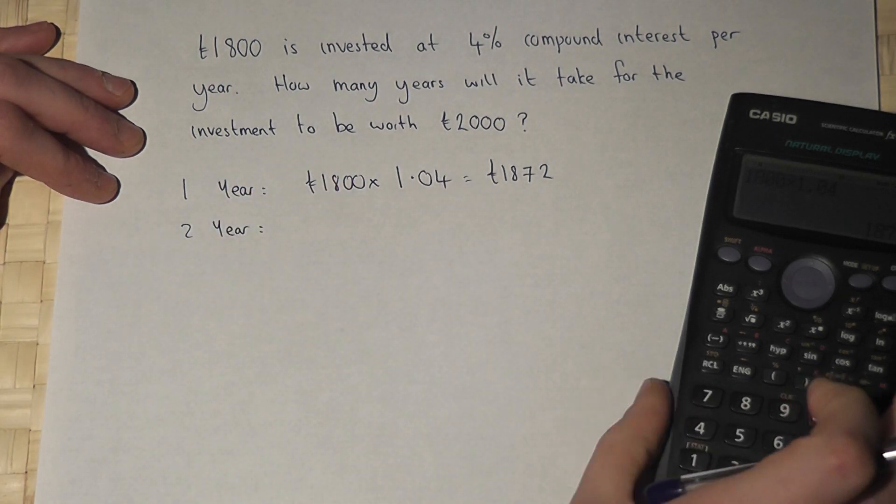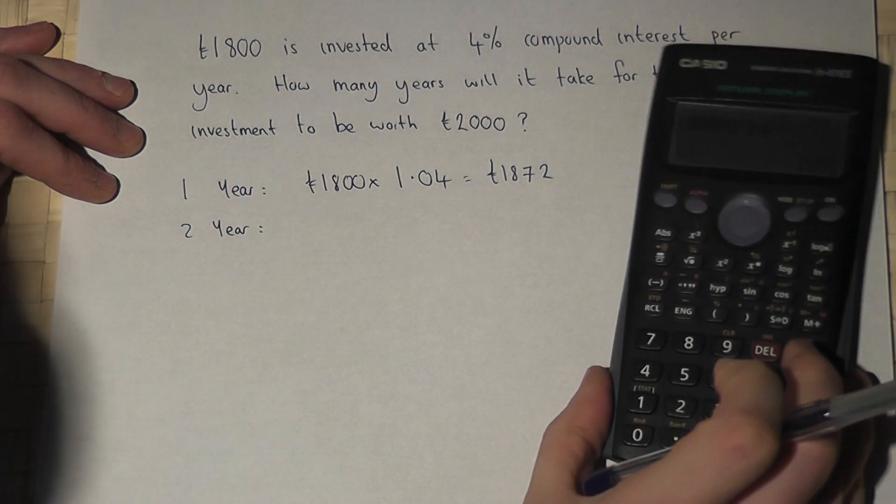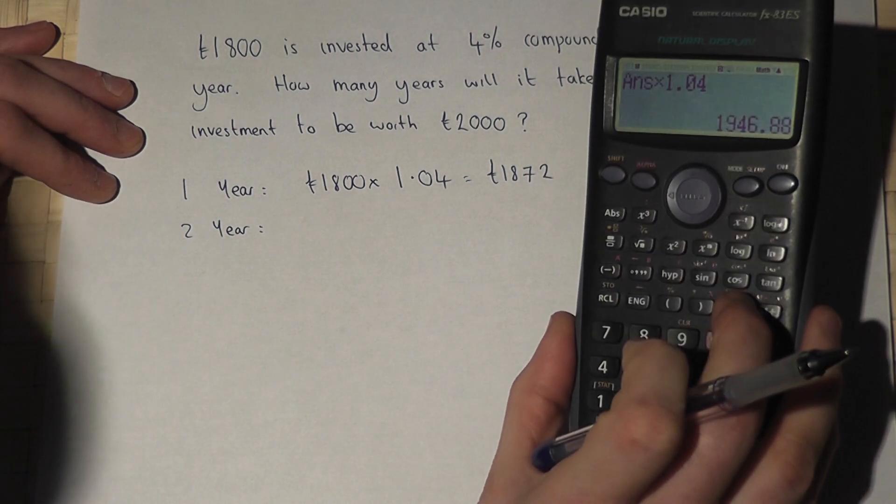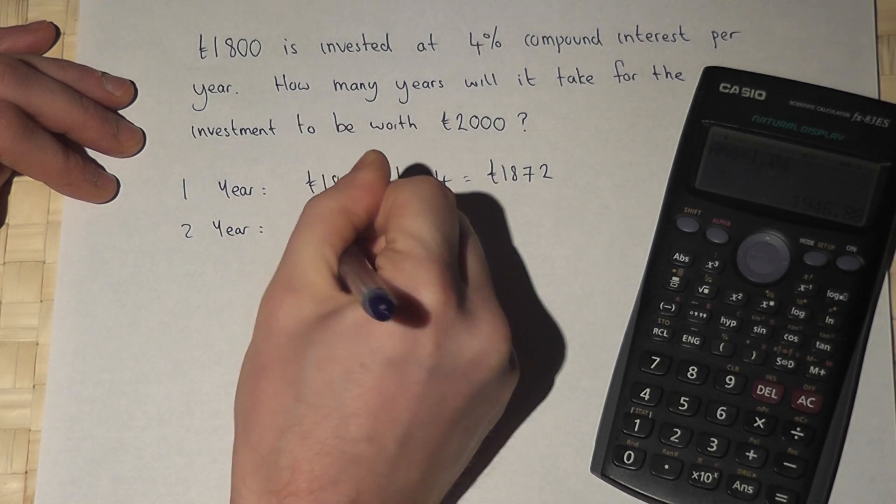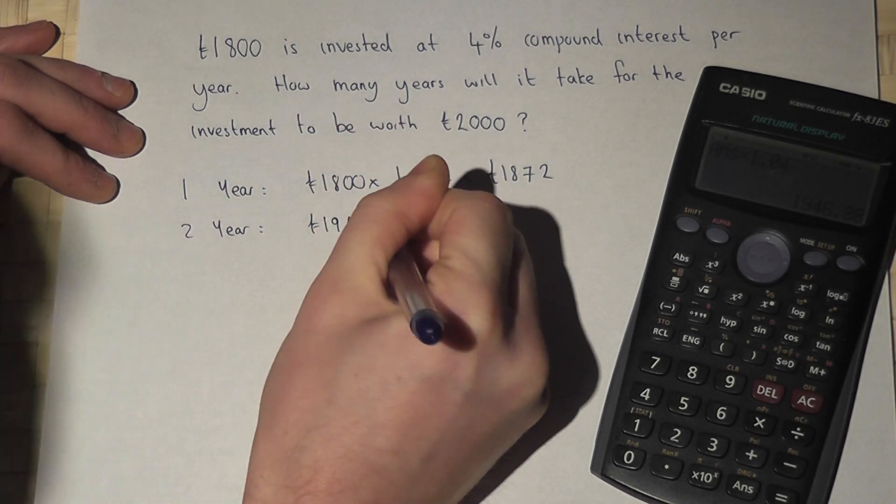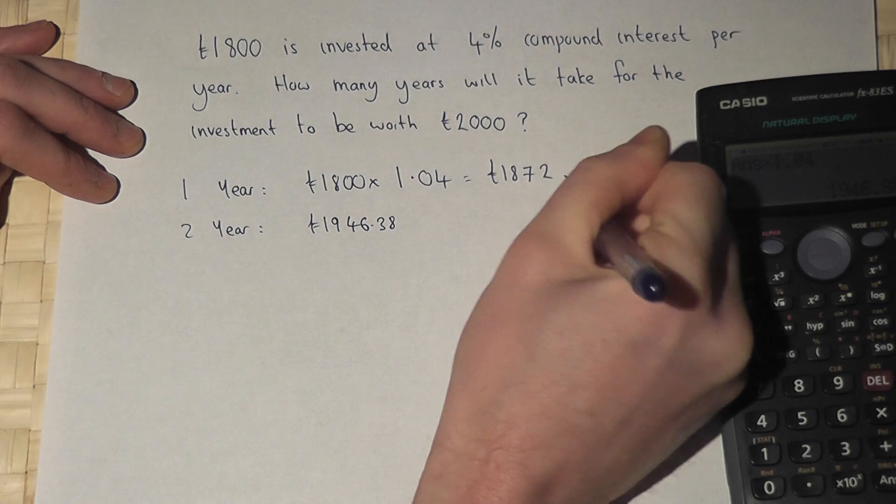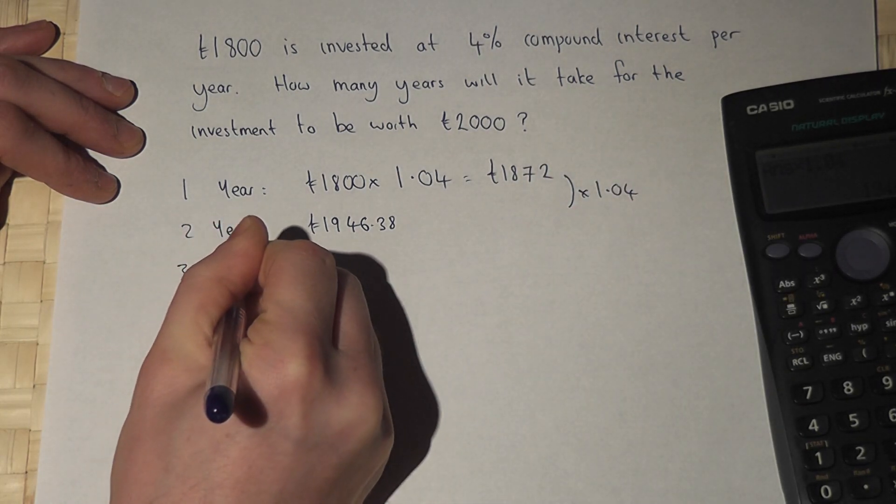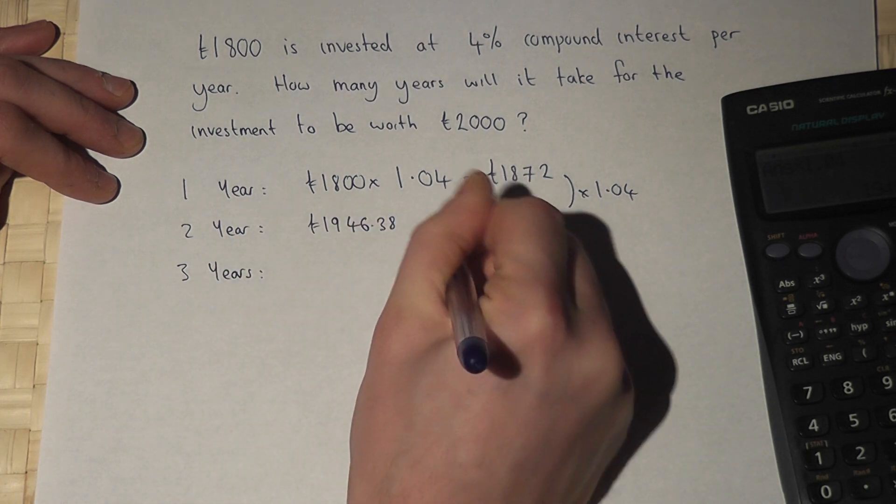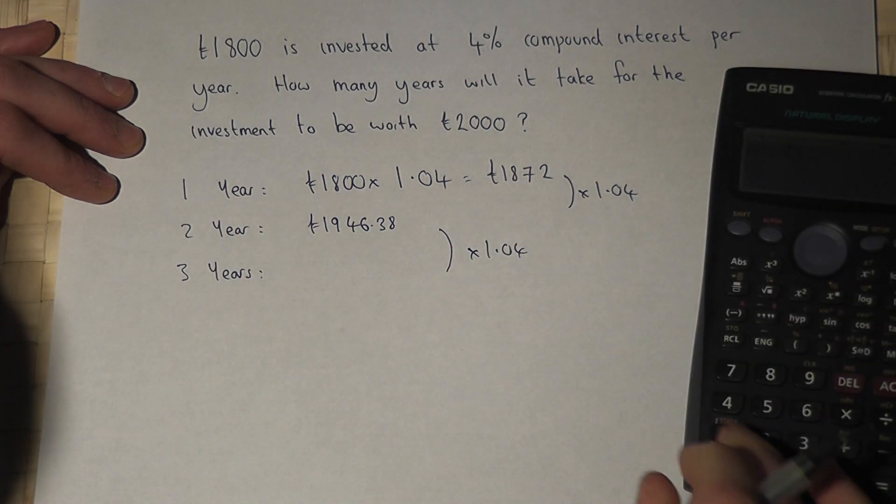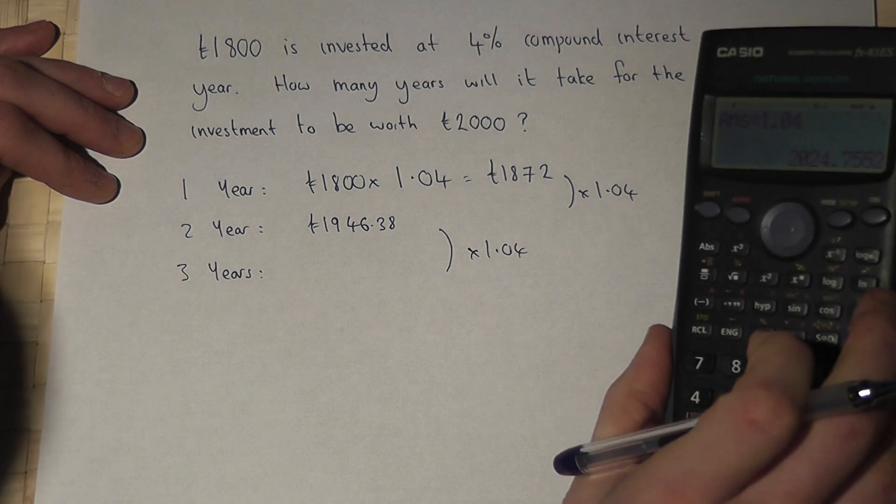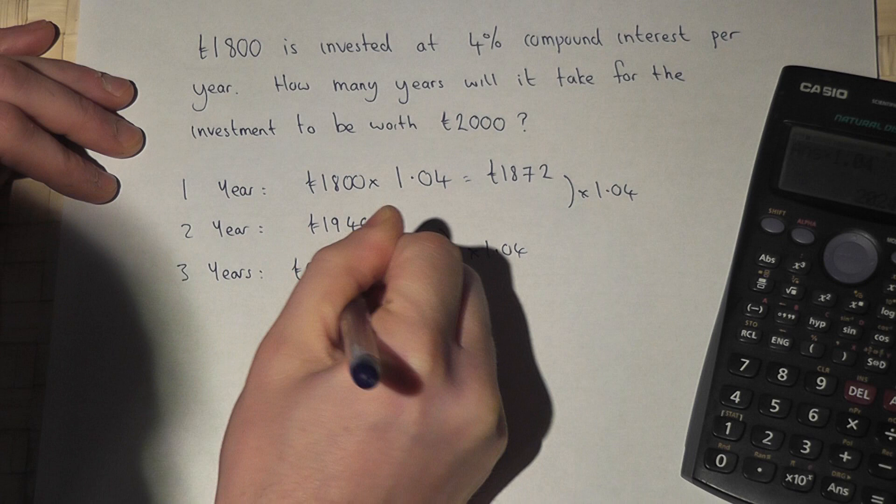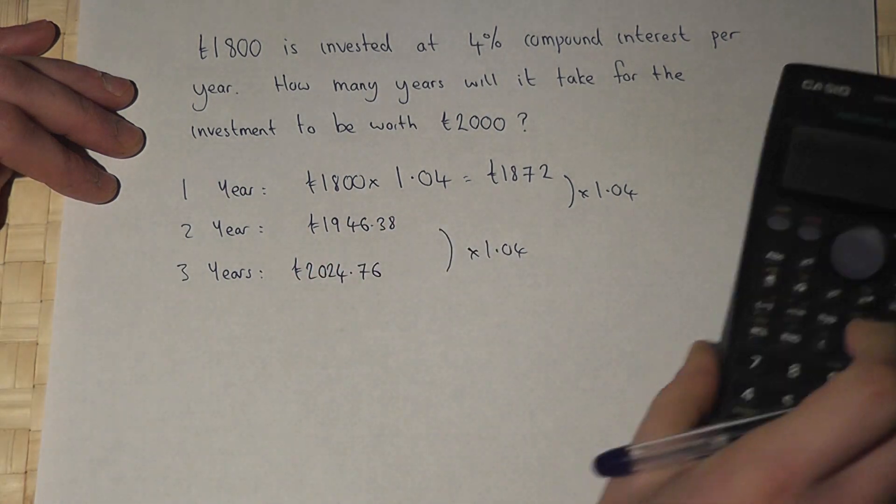If I now times this new amount by another 1.04, the answer is now £1,946.38. After three years, if I times by 1.04 again, I now get £2,024.76.